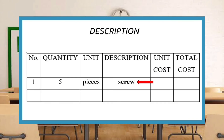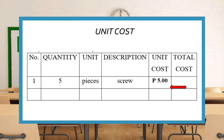Description is the name of the item itself. You can also describe the item by its color, size, or brand. Unit cost is the price of each item. For example, the price of a screw is five pesos; therefore, you should write five.